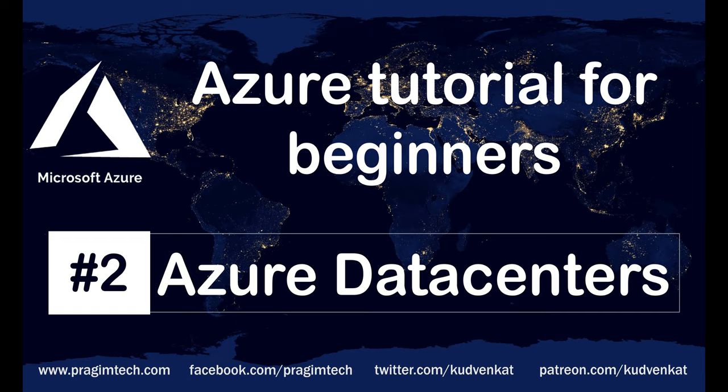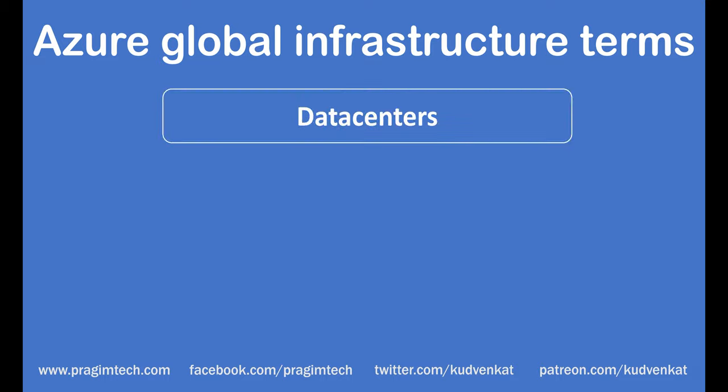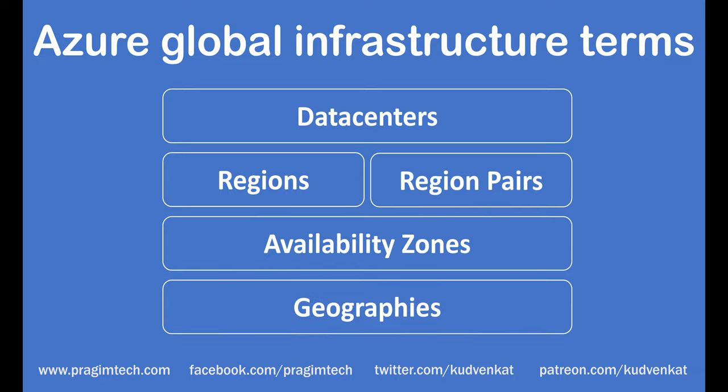This is Part 2 of the Azure tutorial. To understand Azure better, we need to understand Azure global infrastructure terms like data centers, regions, region pairs, availability zones, and geographies. In this video we'll discuss data centers, and the rest — regions, region pairs, availability zones, and geographies — in our upcoming videos.